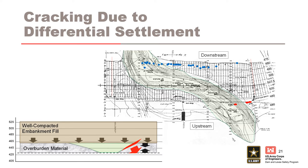Looking at a profile along the centerline, we can see the well-compacted fill of the embankment shaded in brown applying pressure to the soft, compressible overburden material shaded in gray, as well as the well-compacted fill placed in the old Pateau riverbed. The difference in stiffness between the well-compacted riverbed fill and the compressible overburden resulted in a low stress zone, developing a crack and opening up. It's possible this crack was continuous from upstream to downstream from the start, or only part of the way across, and was ultimately opened further as it was loaded by the rising reservoir level through hydraulic fracturing.